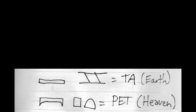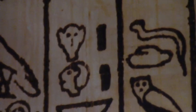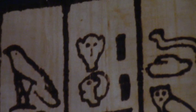If you see the symbol of a small rectangle and two angled lines joined by parallel lines, that is the symbol for Ta, and that means Earth — where we are. In heaven, the skies, the cosmos, that is Pet, represented by a small table shape and two letters, P and T — the square and the loaf of bread. When you see a little head, it means Tep: on top of.